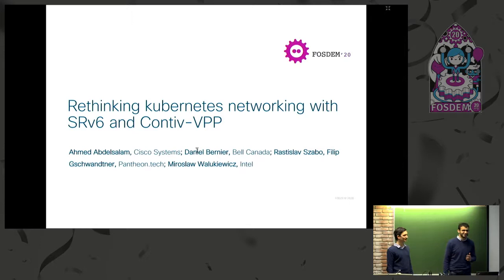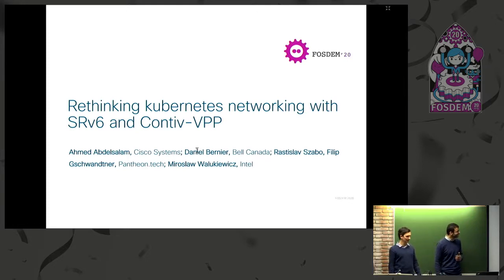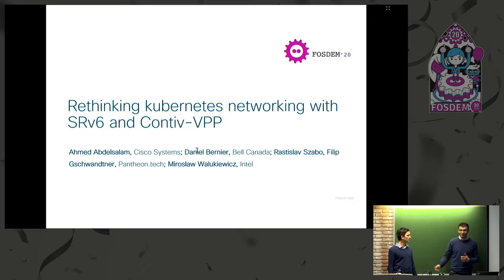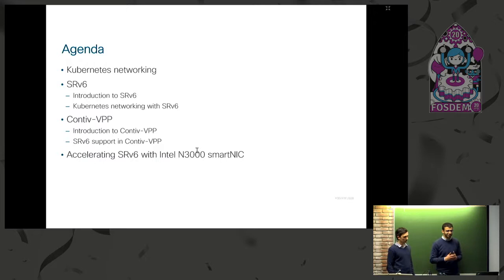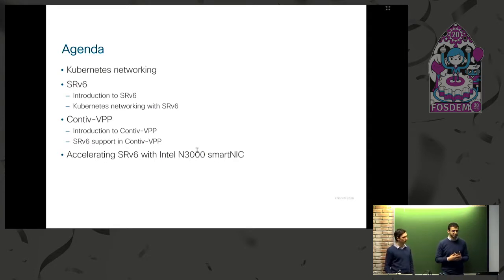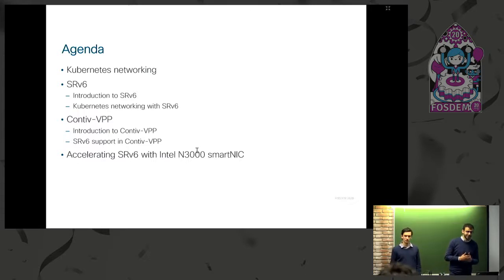Good afternoon, thanks for your time. Today we're going to talk about Kubernetes networking with SRV6 and Conti VPP — it's another way to think about Kubernetes networking. My name is Ahmed Abdusalam, I work for Cisco Systems. With me is Rasto from Pantheon and Merik from Intel. Our agenda: we'll briefly cover Kubernetes networking, introduce SRV6 technology, discuss Conti VPP, and then cover SRV6 acceleration using Intel SmartNIC.